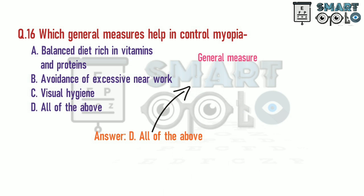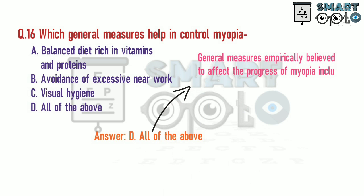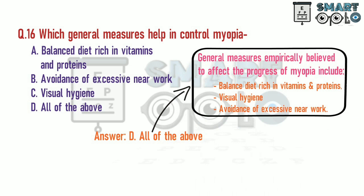General measures empirically believed to affect the progress of myopia include balanced diet rich in vitamins and proteins, visual hygiene, and avoidance of excessive near work.